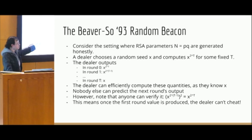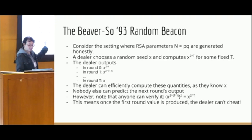What is a good property of this sequence? Anybody can just verify that it is the correct sequence because what is the reverse of the sequence? It's just squares. So anybody can verify, but nobody can predict the next epoch's output. This means once the first round value is produced, x, the dealer can't cheat. And it's unpredictable. It is verifiable.